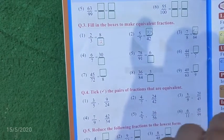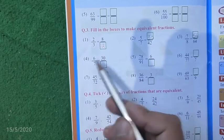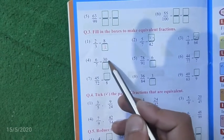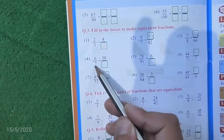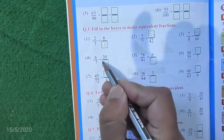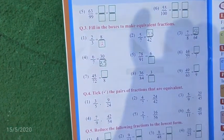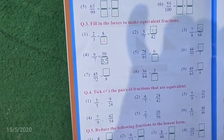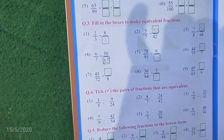Our next part is 6 upon 7 equal to 30 upon which number. Here we have been given both numerators. 6 times which number is 30? 6 times 5 is 30, so we will multiply 7 with 5. 7 times 5 is 35. So 30 upon 35 is the equivalent fraction of 6 upon 7.